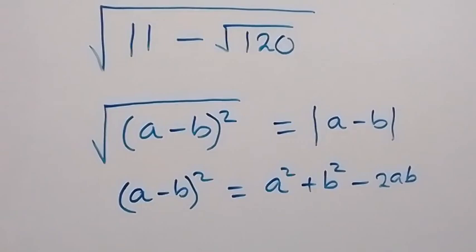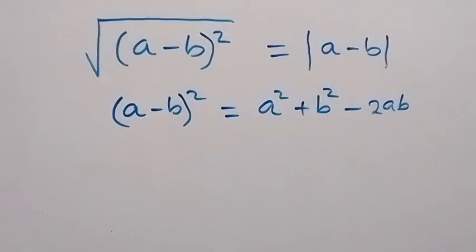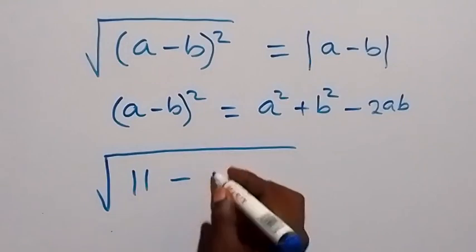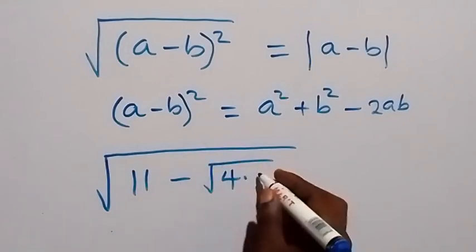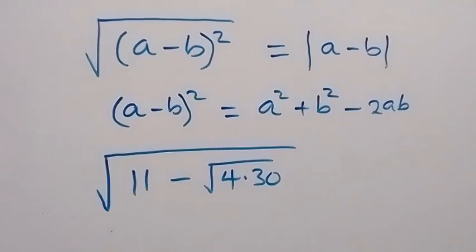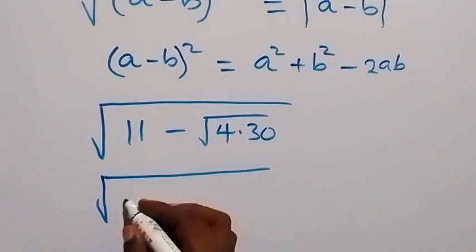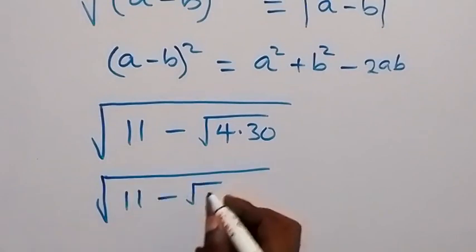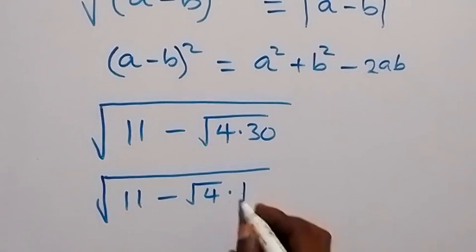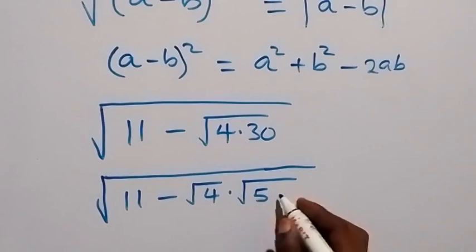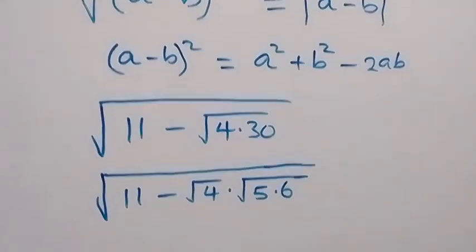From here, we can separate √120 as √(4 times 30), and this will become √11 minus √(4 times 30). In the next step, this is the same thing as √11 minus √4 times √30, which we can write as √5 times √6, since √30 equals √5 times √6.